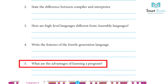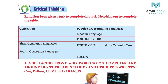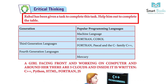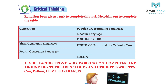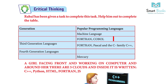Critical thinking: Rahul has been given a task — help him complete it by filling in the table of programming languages by generation. First generation — machine language; second generation — FORTRAN, COBOL, ALGOL; third generation — FORTRAN, Pascal, and the C family (C++); fourth generation languages; fifth generation languages.